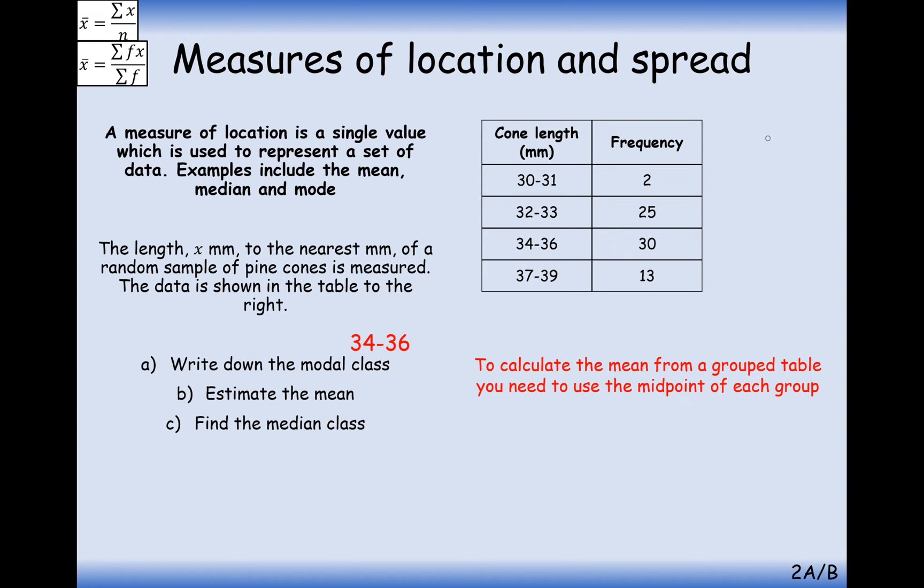Estimate the mean. Well, before we go ahead and do that f times x column, what we need to work out first are these midpoints of this group here. So hopefully this is familiar to you as well, 30.5, 32.5, 35, and 38.